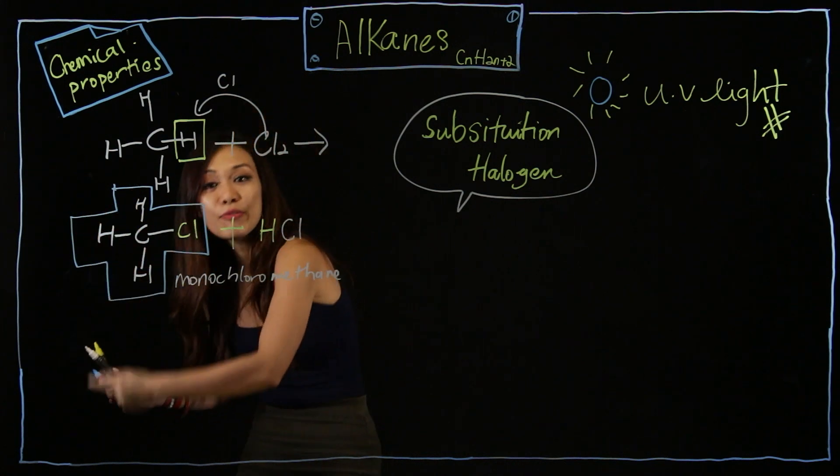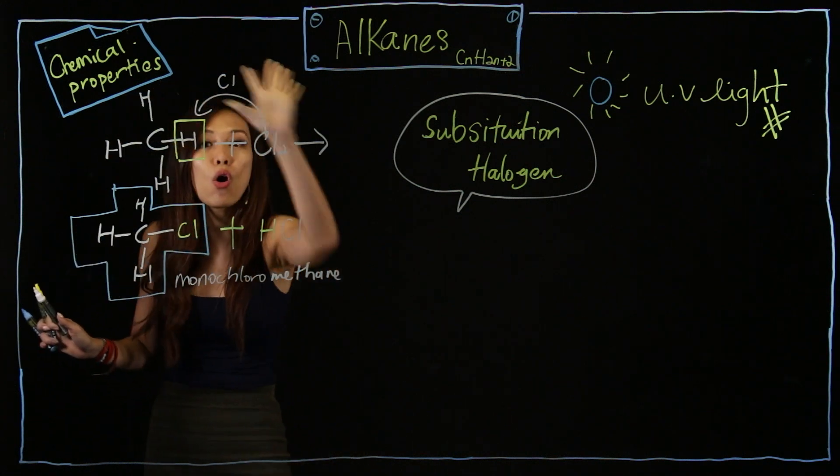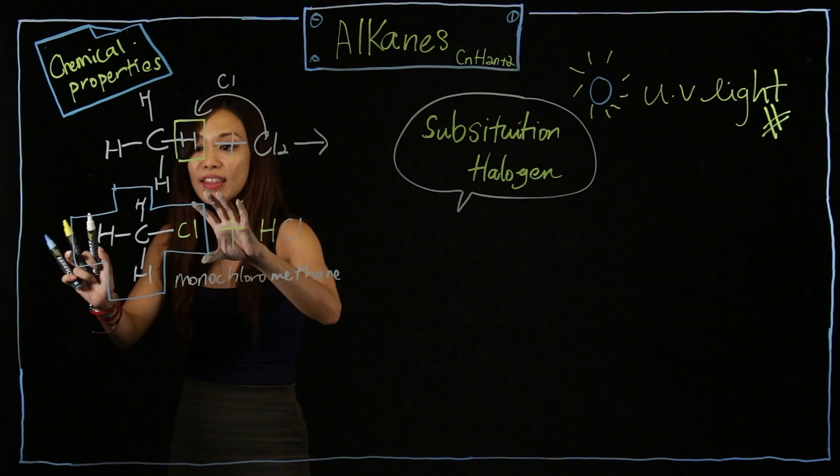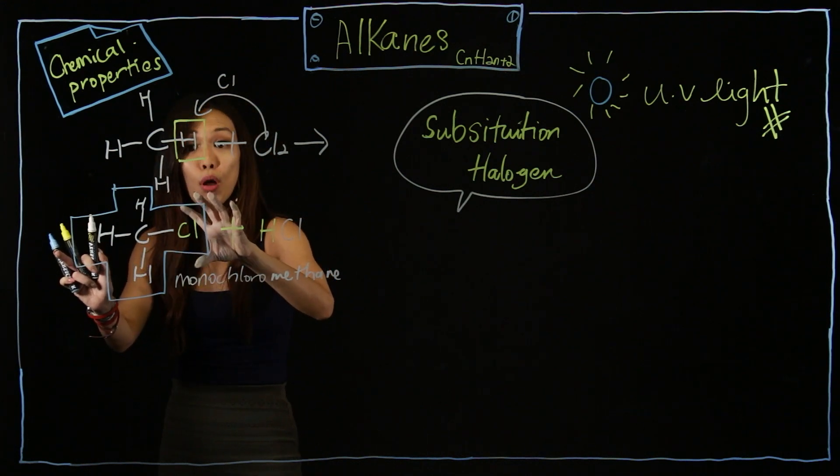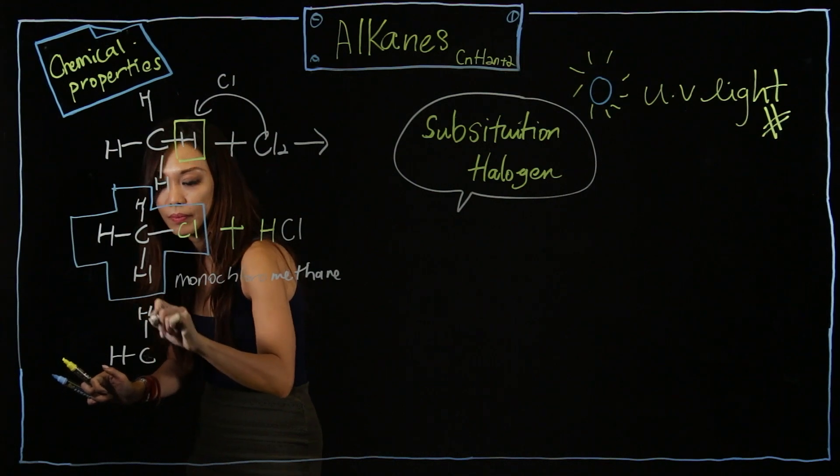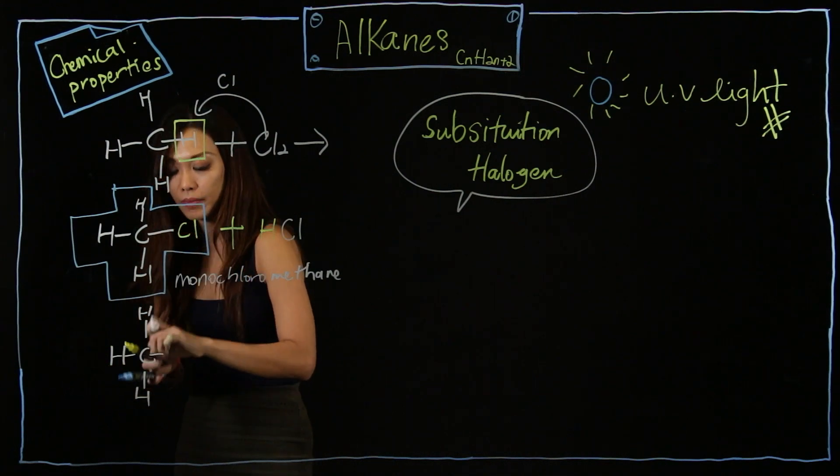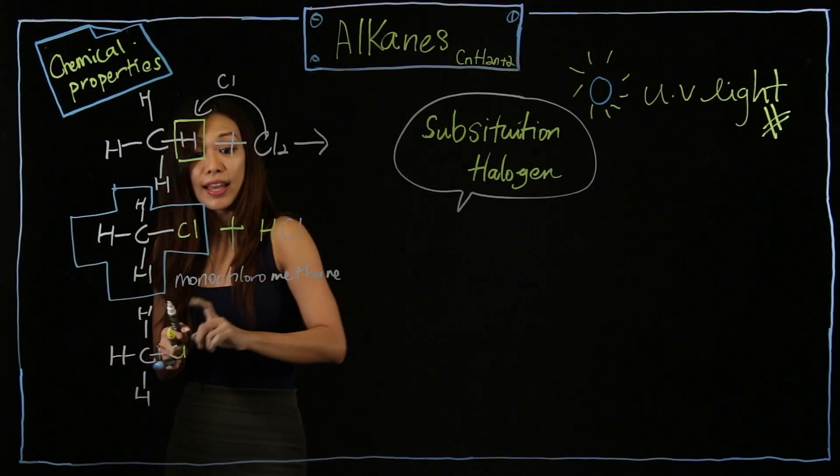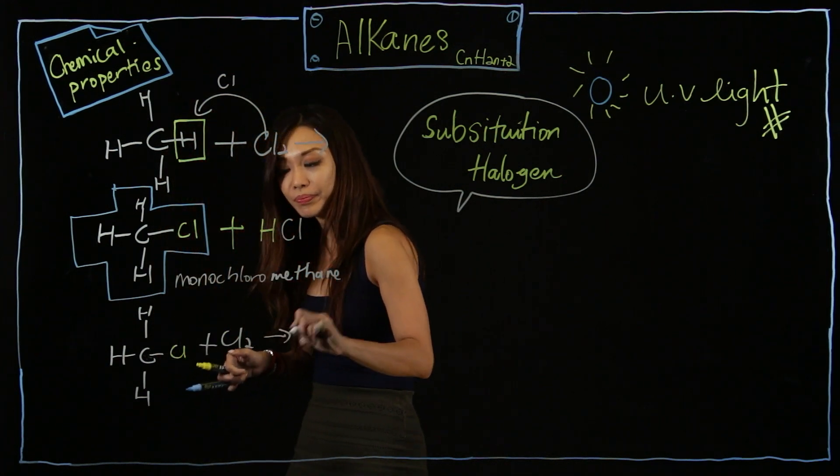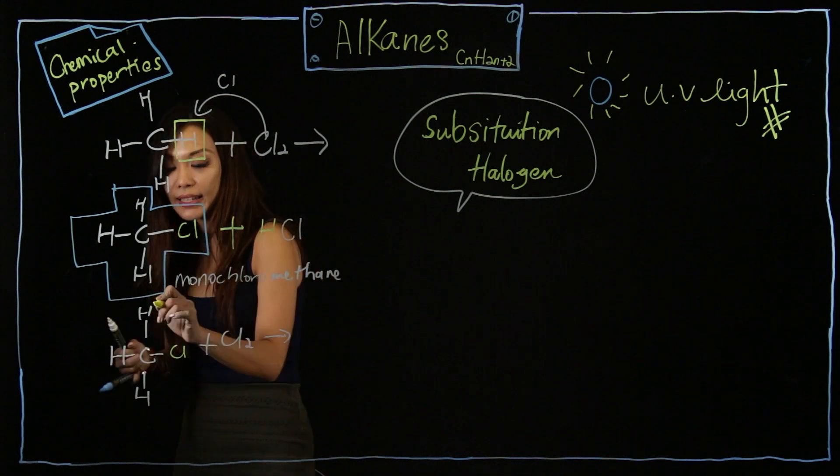You keep on replacing, replacing, replacing, until all the H are being replaced. So the second part, now is my monochloromethane. Instead of adding HCl, I will add Cl2. I will replace another H.